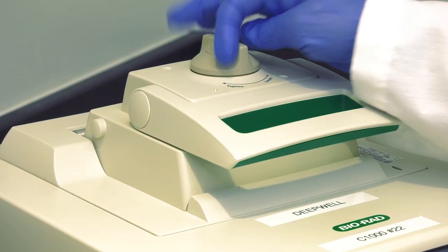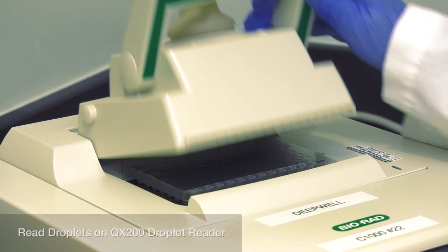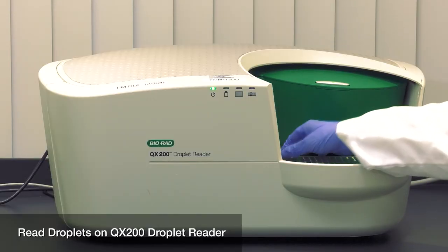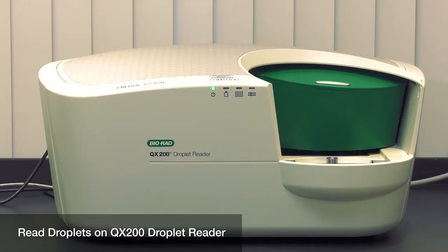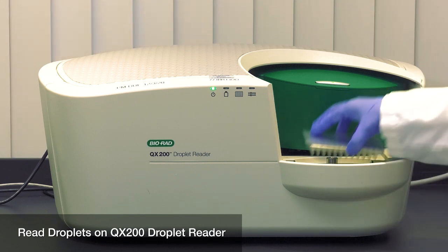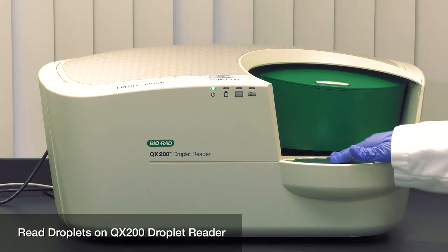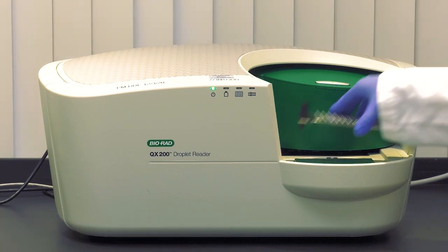Proceed to reading of droplets in the QX200 Droplet Reader. Read droplets within 24 hours of thermal cycling completion. This workflow normally generates slightly fewer droplets than other reactions. It is not unusual to see 10,000 droplets or fewer per well.